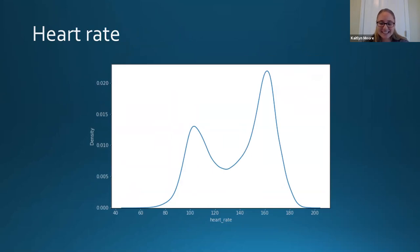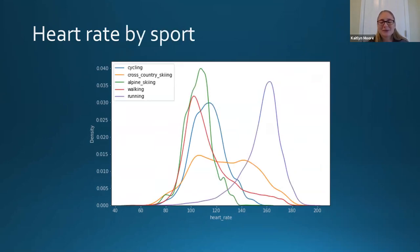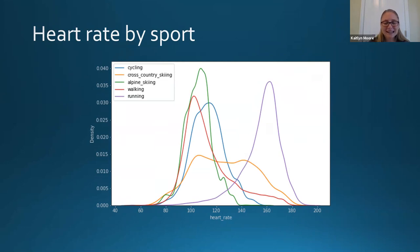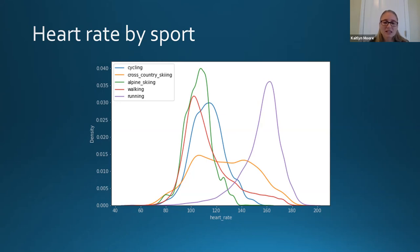Heart rate has a beautiful bimodal distribution. When I look at it by sport, it mirrors my own experience: running is hard, so I have a very distinct heart rate peak for running, and most everything else is a little bit lower. The cross-country skiing distribution is actually a little bimodal — my suspicion is this represents the transition from skiing uphill with a high heart rate and then skiing downhill where you're recovering substantially.